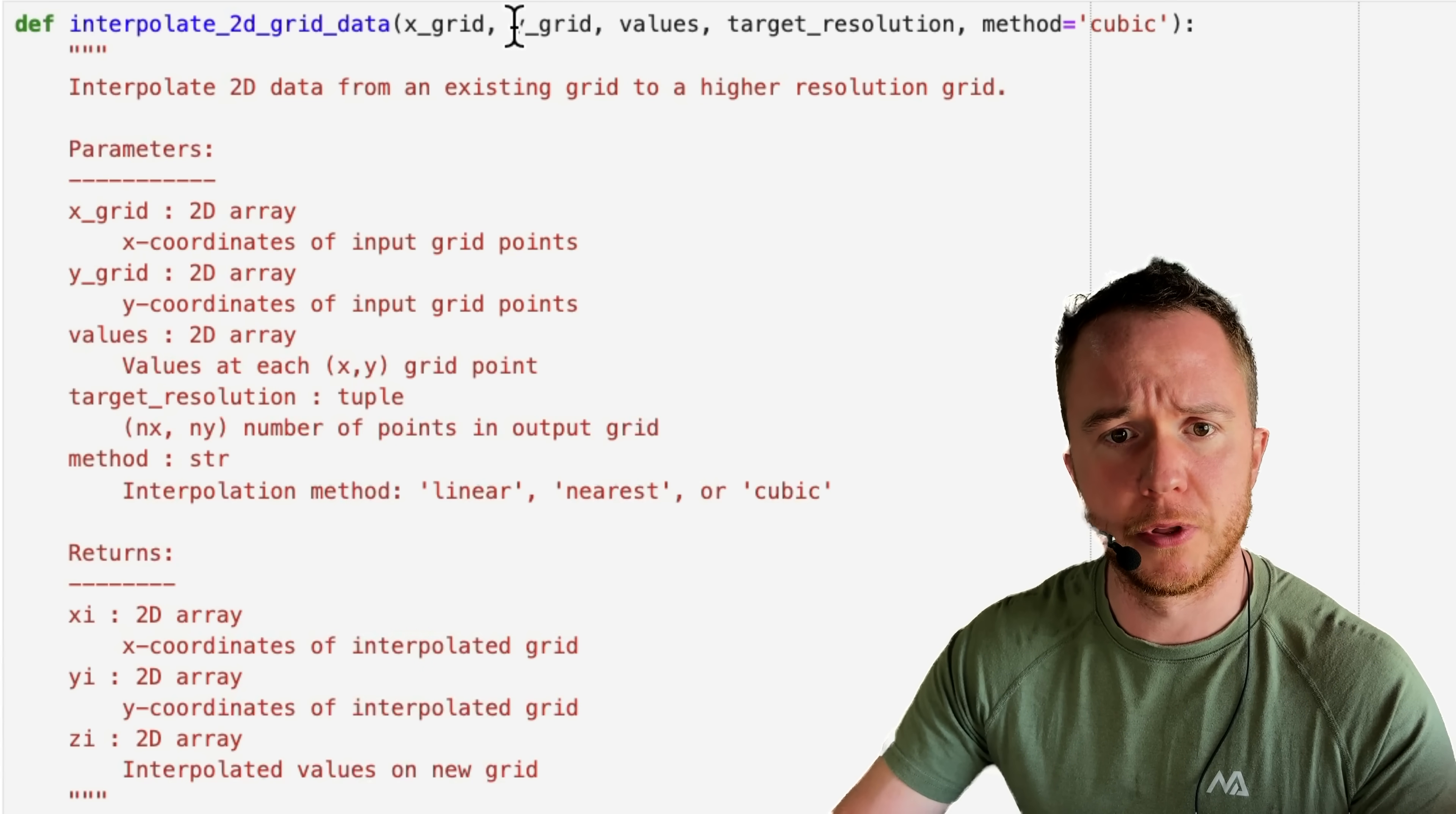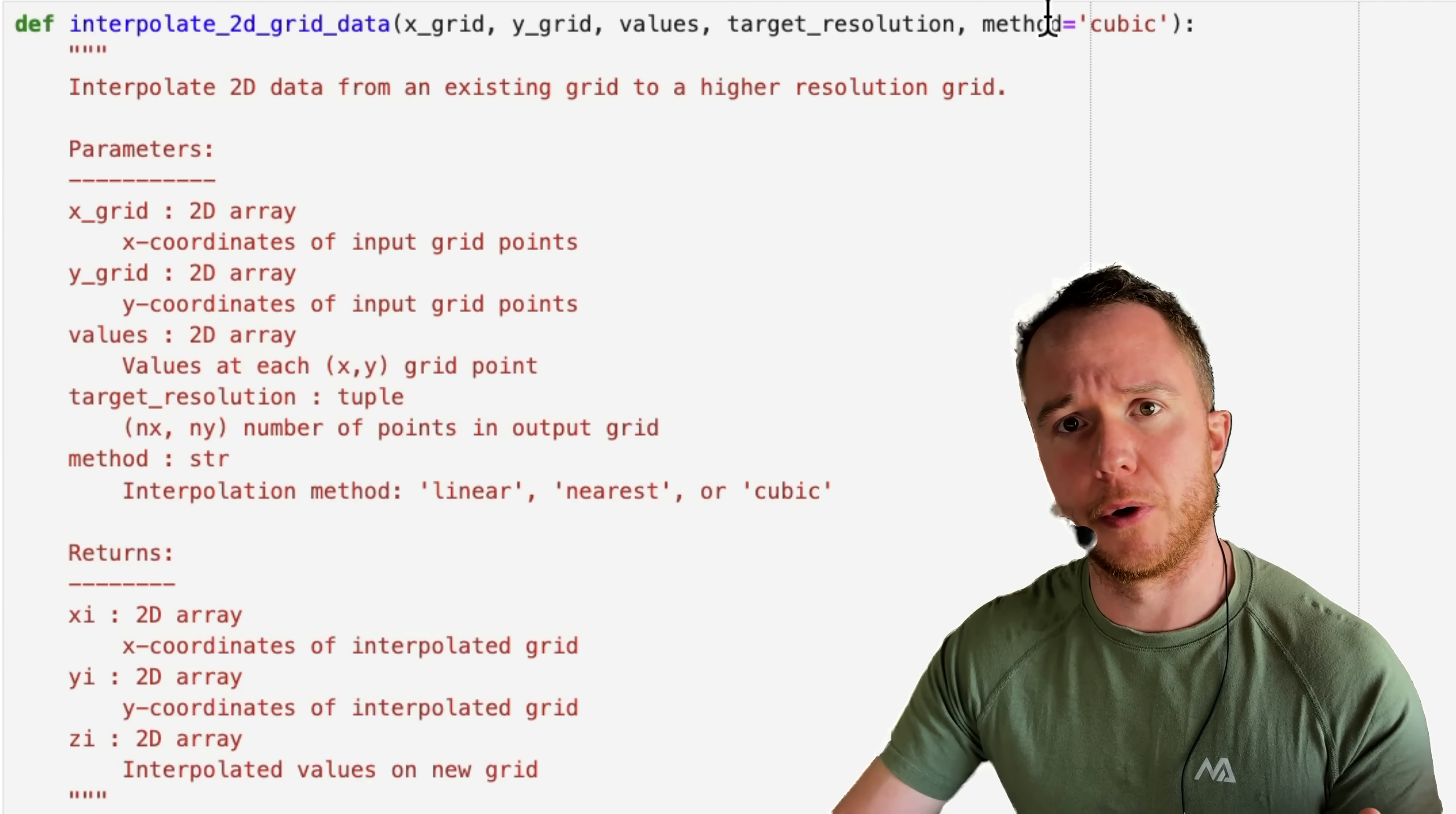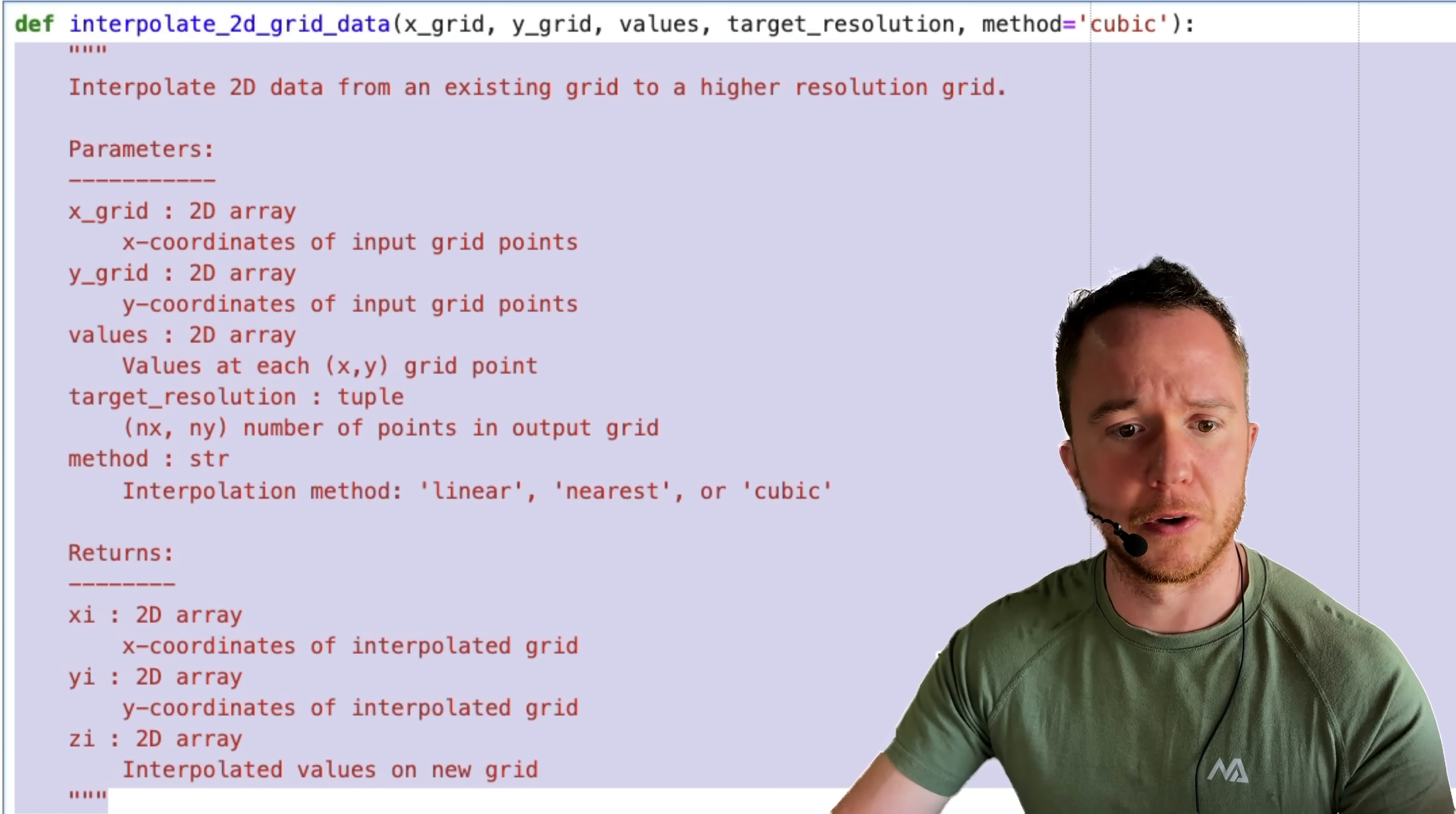The interpolation function takes the x_grid, the y_grid, and the values, so our data as input arguments, and the target resolution, so to what resolution do you want to interpolate to, and the method, so whether we use cubic interpolation, linear interpolation, nearest neighbor interpolation. It tells you that here in a doc string, so Claude nicely documents its own code.